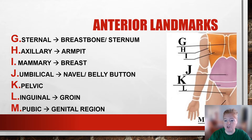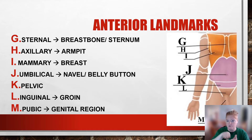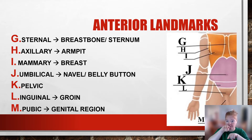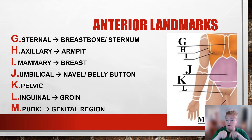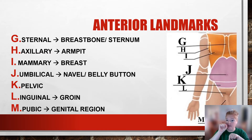Further below the inguinal area, you have pubic, which is the genital region. An easy way to keep track of those three is PIP — pelvic, inguinal, pubic. There's a P, then an I, then a P. Remember that pubic refers to the genitals: pelvic, inguinal, pubic.